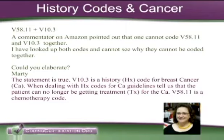And I believe that even with a primary and secondary cancer — say your patient had breast cancer, no longer getting treatment for that breast cancer, they had that 10 years ago, and then a year ago they found out they had lung cancer — that is a secondary cancer to the breast cancer and you can no longer use a history code. So if you're getting treatment for any cancer after or during the time that you have cancer, the history code does not apply.